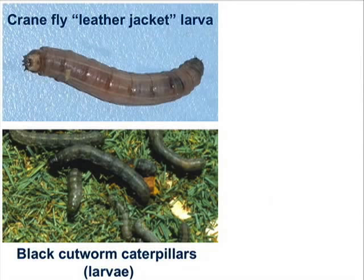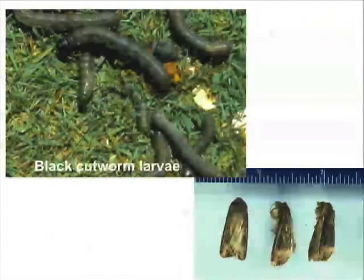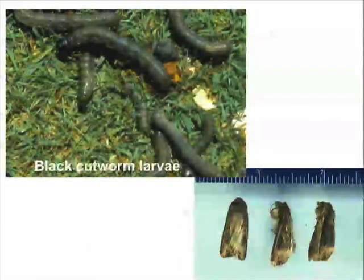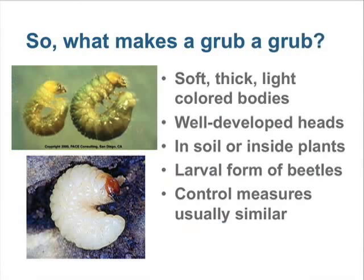These two insects are also sometimes called grubs, but in these cases the term is used in error, because although crane fly larvae and caterpillars are both soft-bodied like grubs, they're much longer and thinner, and much darker in color. But the main reason caterpillars and crane flies are not called grubs is because they're very different evolutionarily. While grubs are the immature stages of various beetles, caterpillars like the cutworm are the immature stage of moths and butterflies, and leatherjackets are the immature stage of crane flies — large flies closely related to mosquitoes.